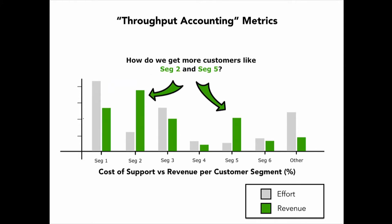We can start to see, as opposed to just taking any deal on the table, who are our most profitable customer segments we want to go after. When there's money on the table it's easy to grab it and not think about the implications, especially when the costs are so difficult to manage. One of the big things we need to be able to do in our organizations is know when to say no. When all those costs are invisible, it's really hard to make good business decisions.